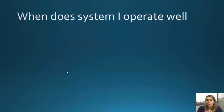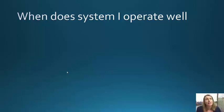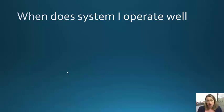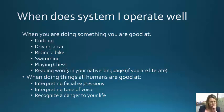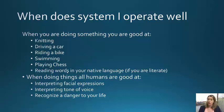When does System 1 operate well? When you're in a forest or in Red Rocks and you hear rattling near your feet, you don't have to stop and think about what rattling means or what to do — System 1 knows right away to get out of danger. System 1 also operates really well when you're doing something you're proficient at, like knitting, driving a car, riding a bike, swimming, or playing chess. If you don't know how to play chess, System 1 doesn't operate well at all.